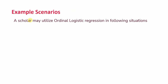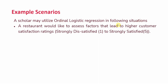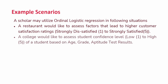Here are a few example scenarios where a scholar may utilize Ordinal Logistic Regression. First, a restaurant would like to assess factors that lead to high customer satisfaction ratings, from strongly dissatisfied to strongly satisfied. Second, a college would like to assess the student confidence level — low to high — based on their age, grade, and aptitude test results.